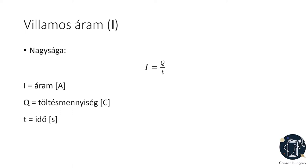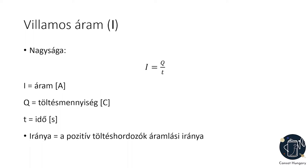Mennyiség definiálásánál általában SI mértékegységek szerepelnek. Az áram akkor nagyobb vagy erősebb, hogyha ugyanannyi idő alatt több az átáramoltatott részecskék együttes töltése, vagy ugyanannyi töltési részecske kevesebb idő alatt áramlik át. A töltésmennyiséggel egyenesen arányos az áram, az idővel pedig fordítottan arányos. A villamosáram iránya a pozitív töltéshordozók áramlási irányával egyezik meg.